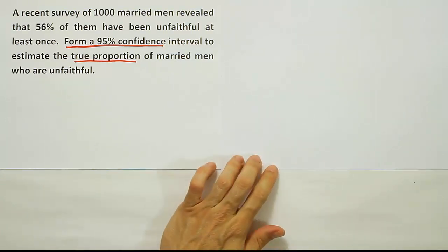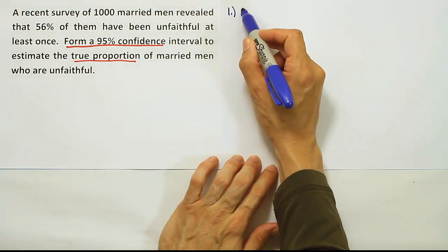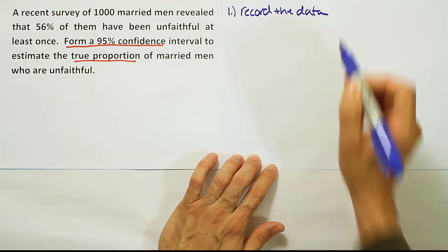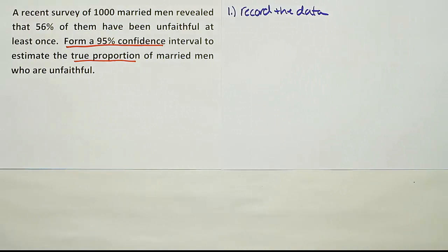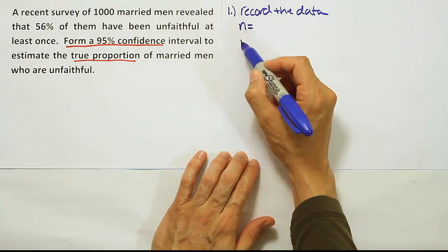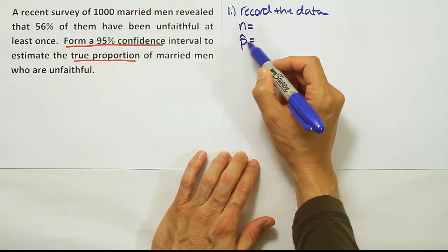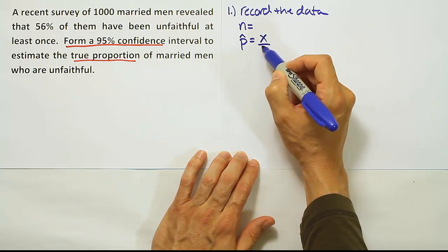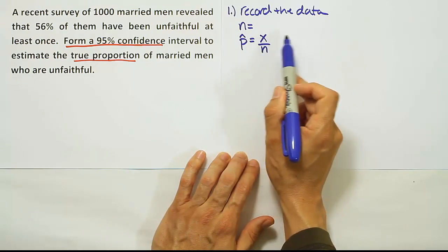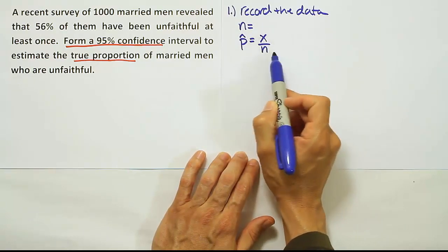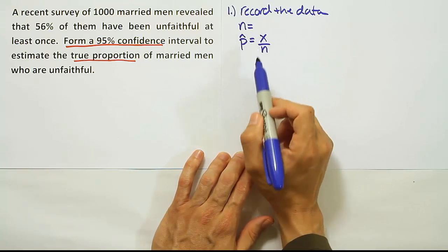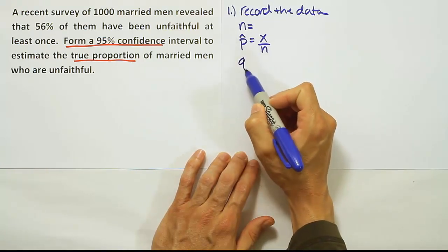First step is to record the data. We're going to keep a list of everything we have in the problem that's helpful. For these problems, you're going to need an N, a P-hat (the sample proportion, given as either x over n or as a percent), Q-hat, and the confidence level.